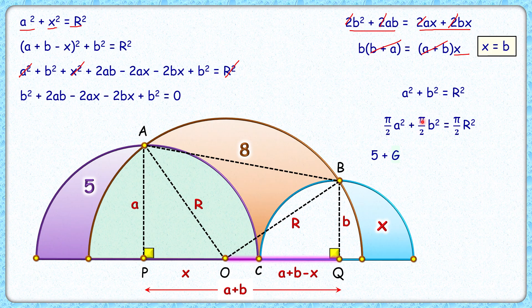Same way, pi B squared by 2 represents the area of this blue semicircle. If we shade this as the yellow region, then pi B squared by 2 will equal X plus the area of this yellow region. And pi R squared by 2 is the area of this brown semicircle, which is nothing but 8 plus this green area plus this yellow area.